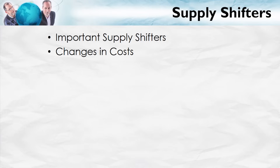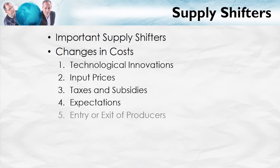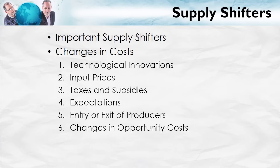Let's look at supply shifters in more detail. The point is not to memorize the list, but to understand that the major factor determining how supply shifts is a change in costs — an increase in costs reduces supply, a decrease in costs increases supply. Our task is to understand how various factors change costs. Some are obvious, like technological innovations or changes in input prices, such as a change in wages. Others include taxes and subsidies, expectations, the entry or exit of producers, and changes in opportunity costs. In the next video, I'll go through each of them with examples.